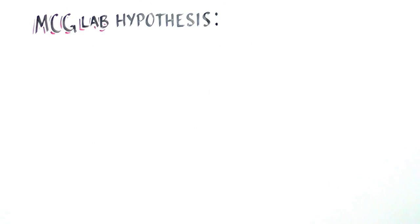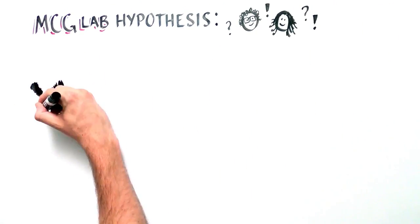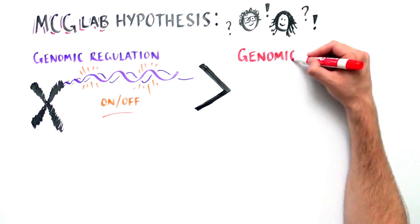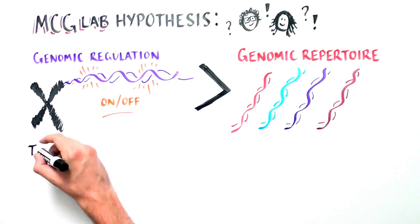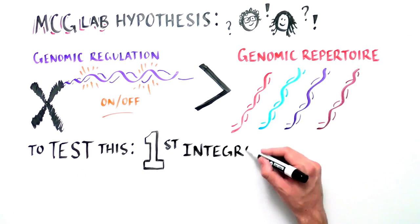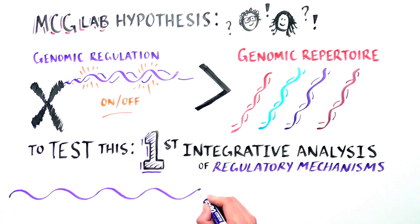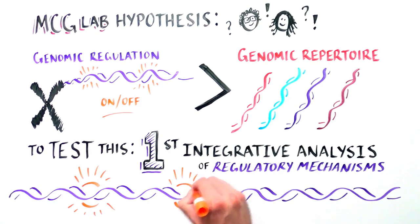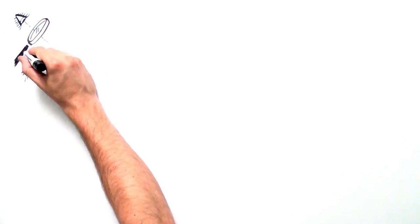The researchers at the MCG lab hypothesized that perhaps genomic regulation rather than gene repertoire was the key. To tackle this question, they carried out the first integrative analysis of the genome regulatory mechanisms of Capsospora.